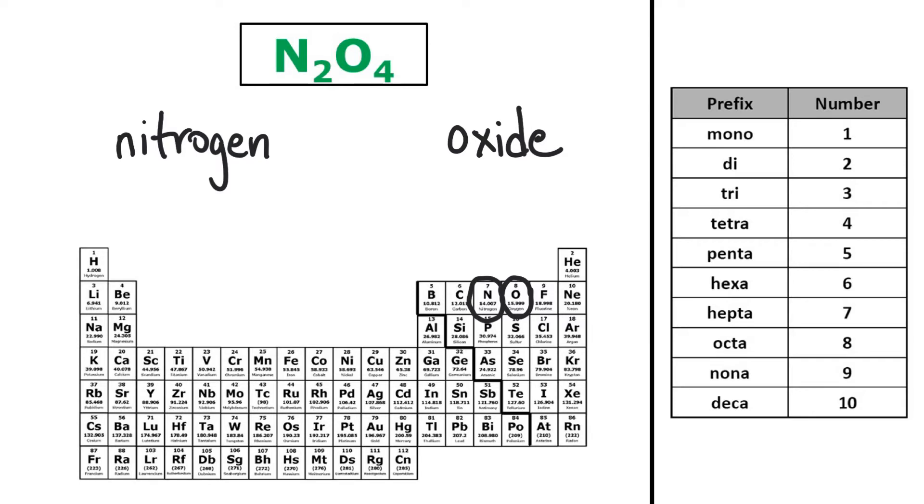And now because this is binary covalent, I need to add prefixes. So for nitrogen, it's N2, and so I need to add the prefix di, so I have dinitrogen.